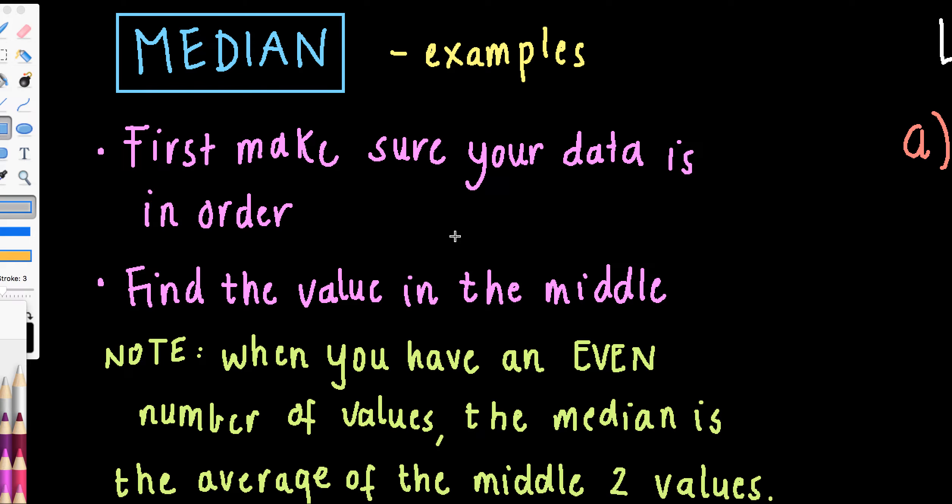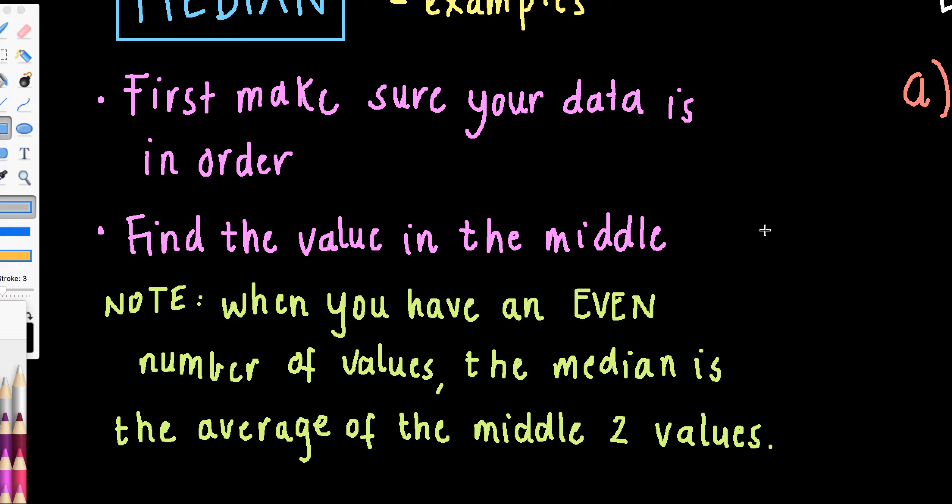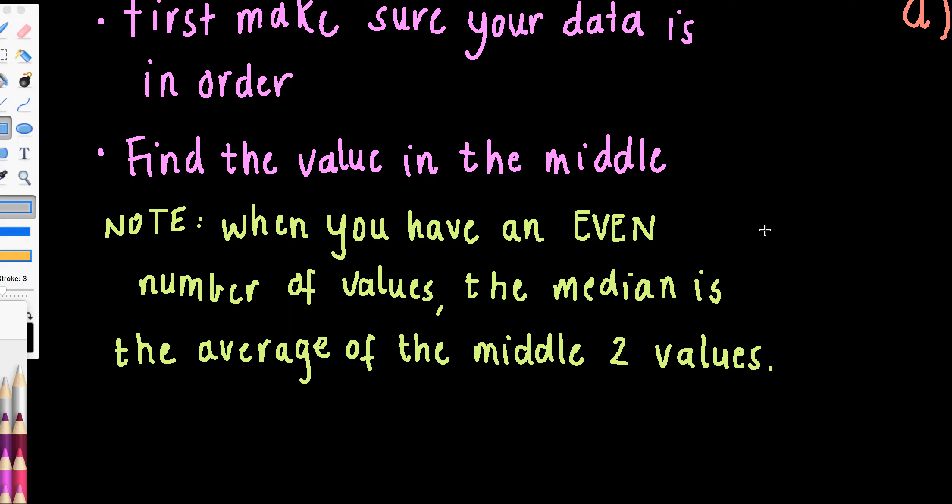Make sure your data is in order first — a big error would be to grab your data, find the one in the middle, then realize it wasn't ordered. Once it's in order, you simply find the one in the middle. Some people do that by crossing out one on either side until they find the middle, which works for small data sets but gets annoying with larger ones like 30 values. Also note: when you've got an even number of values, you don't have one single value in the middle — you actually have two values in the middle. In that case, you take the average of the middle two: add them together and divide by two.